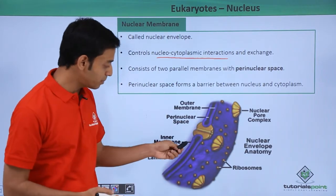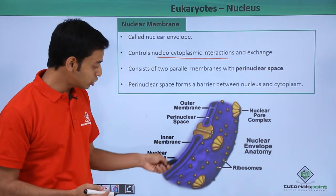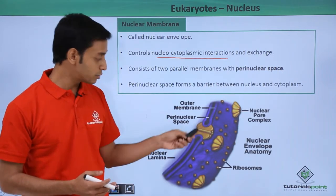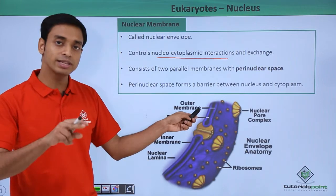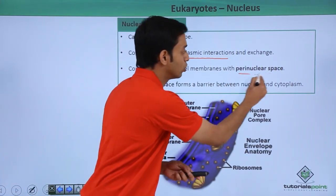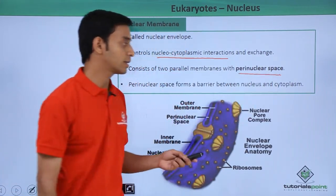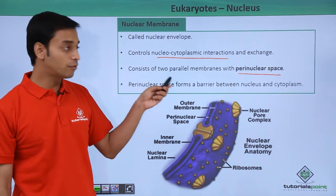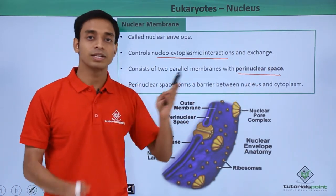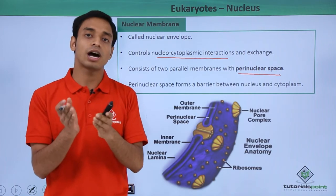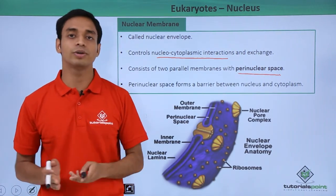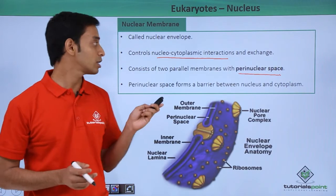The nuclear membrane consists of two parallel membranes — the inner membrane and the outer membrane — which run parallel to each other. The space between these two membranes is known as the perinuclear space. This perinuclear space forms a barrier between the nucleus and the cytoplasm, and decides what type of materials are exchanged between the nucleus and the cytoplasm.